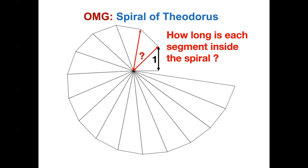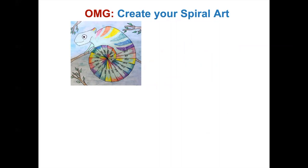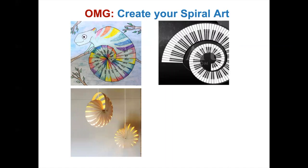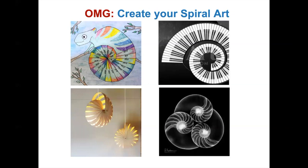The OMG challenge on creativity is to create a unique spiral art. Here are a few examples. The first one is a snail with the spiral. Next is the keyboard with a spiral. The third example is a lampshade with the spiral. Both beautiful and utilitarian. The last one is a combination of three spirals. Now it's your turn to be creative, to create a unique spiral art.